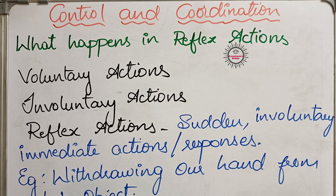Those actions are not under our control — the heart is beating continuously in order to pump the blood. Food material is digesting in our stomach and intestine without our knowledge. We can't control it; we can't stop it or make it fast. Those types of actions taking place in our body without our control are called involuntary actions.